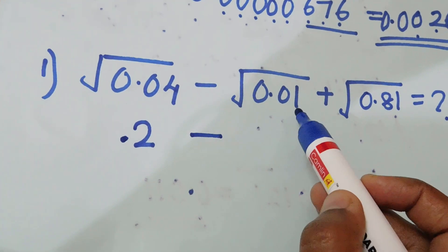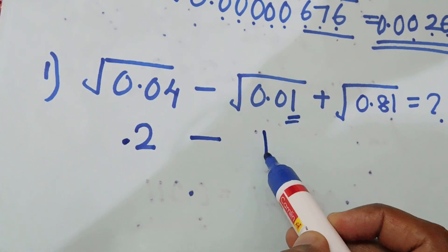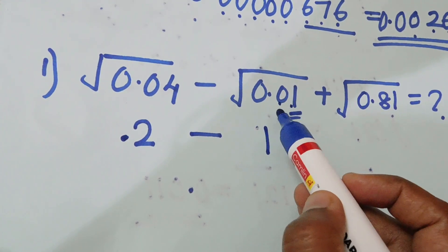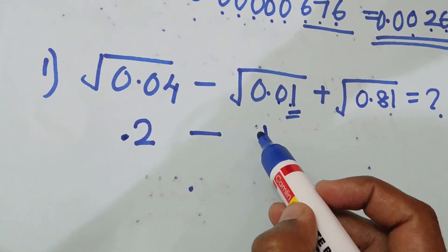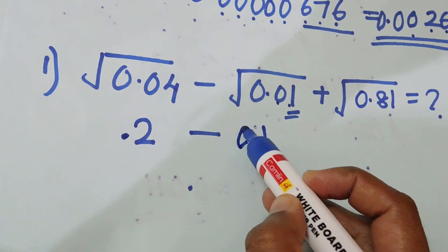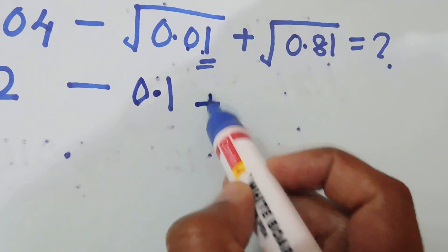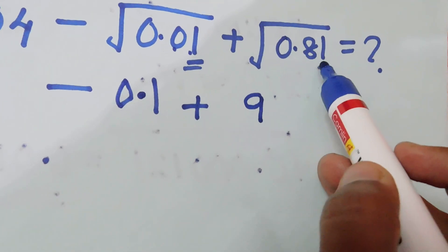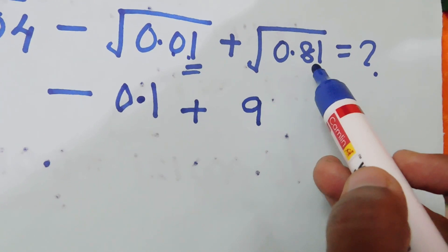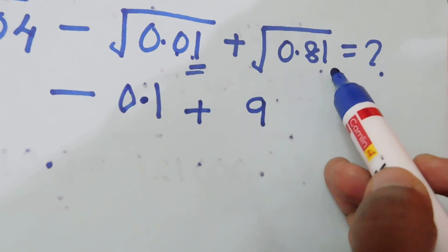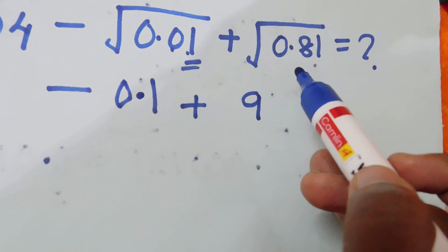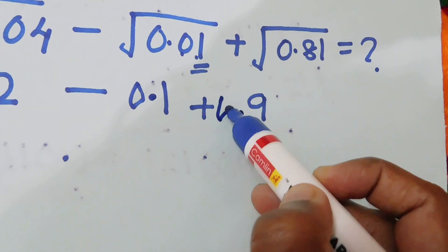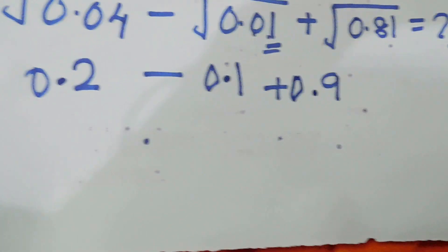We have 0.01 — we have 1 square root. We have 0.02 — we have 2 square root. We have 0.01, 0.02, and 4.0. We also have the result.